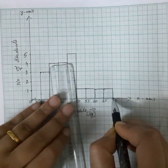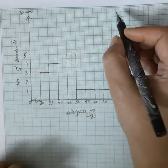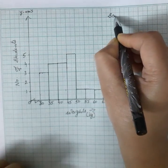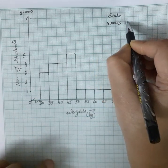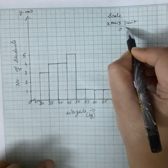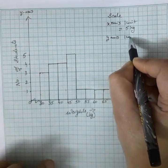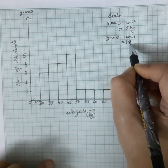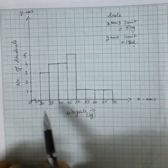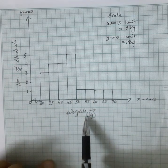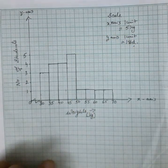For 65 to 70 the frequency is also 1. Now you can explain the scales taken: on the x-axis one unit is equal to 5 kg, and on the y-axis one unit is equal to 1 student. Whenever you make any graph, make sure you explain and label the scales — on the x-axis we are mentioning weight, so 'weight' should be written there, and on the y-axis 'number of students' should be written.